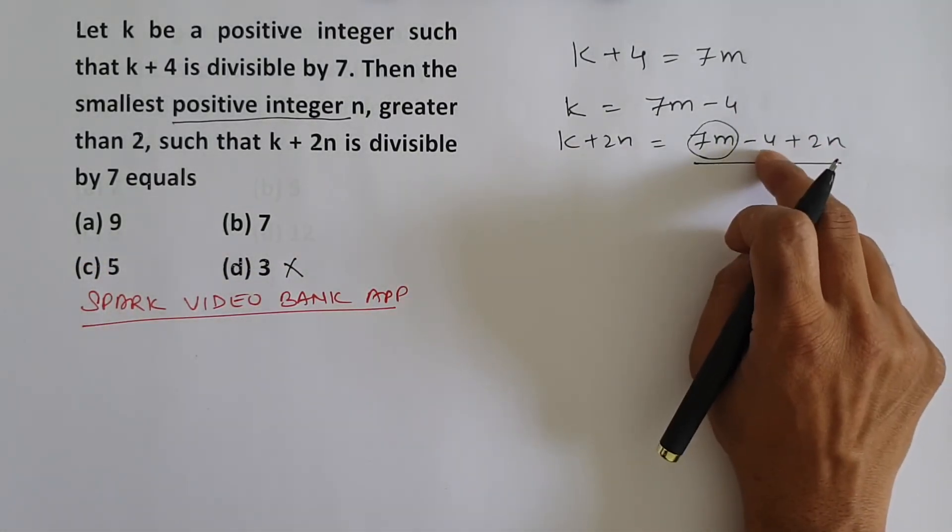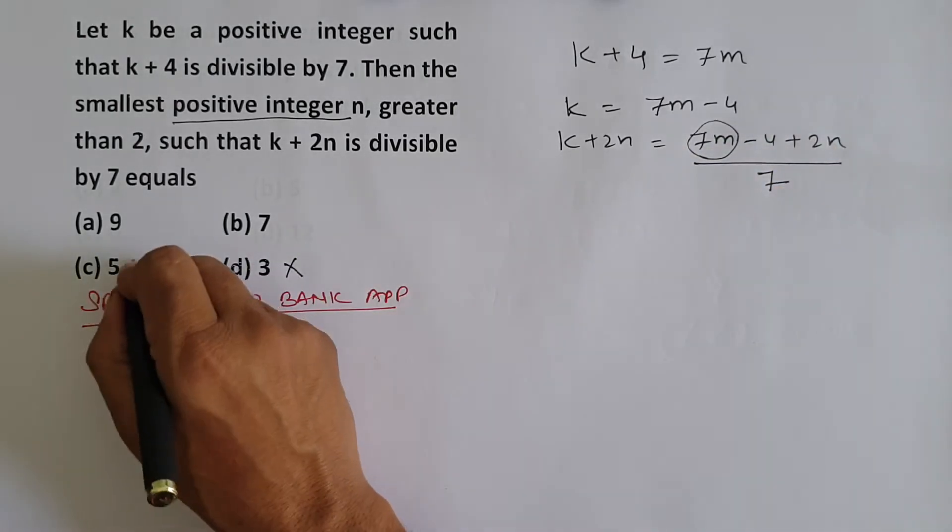5. 10 minus 4 is 6. Is 6 divisible by 7? No.